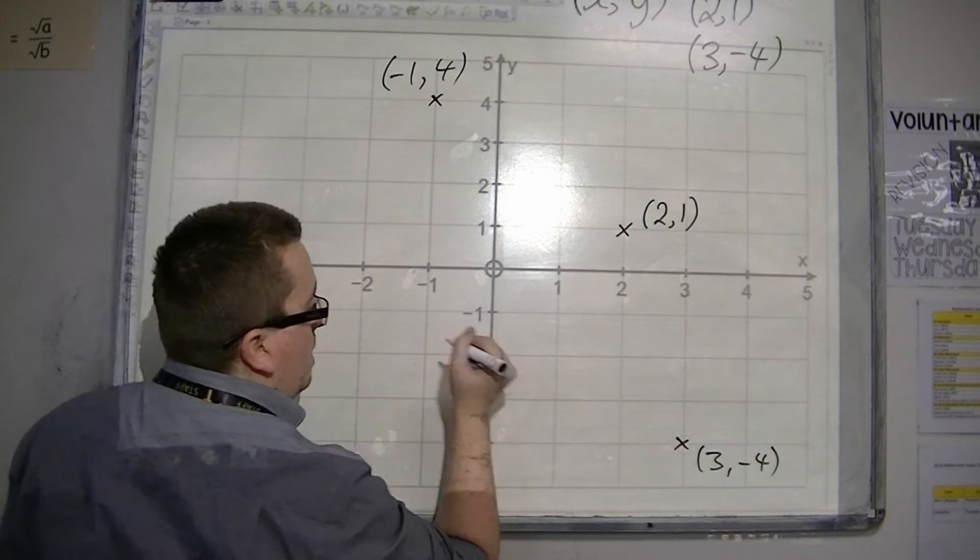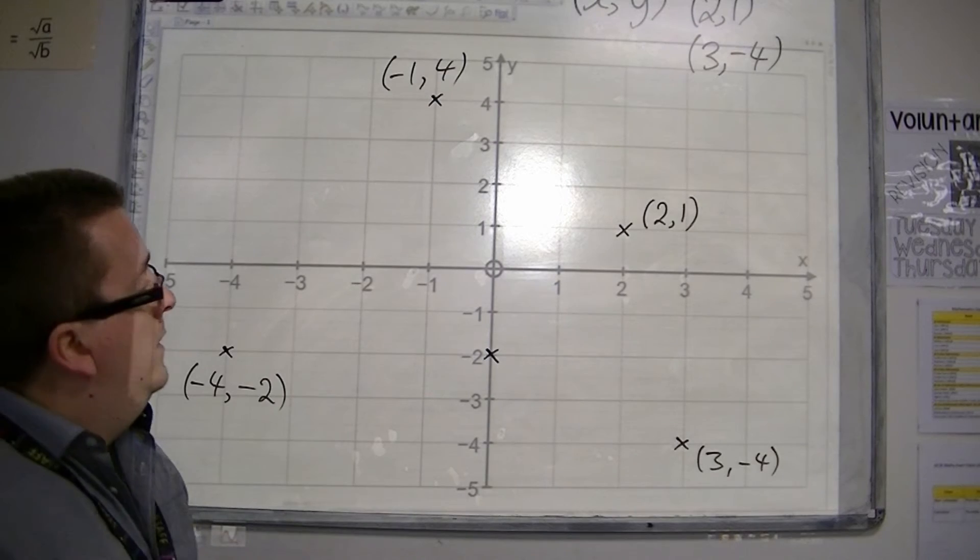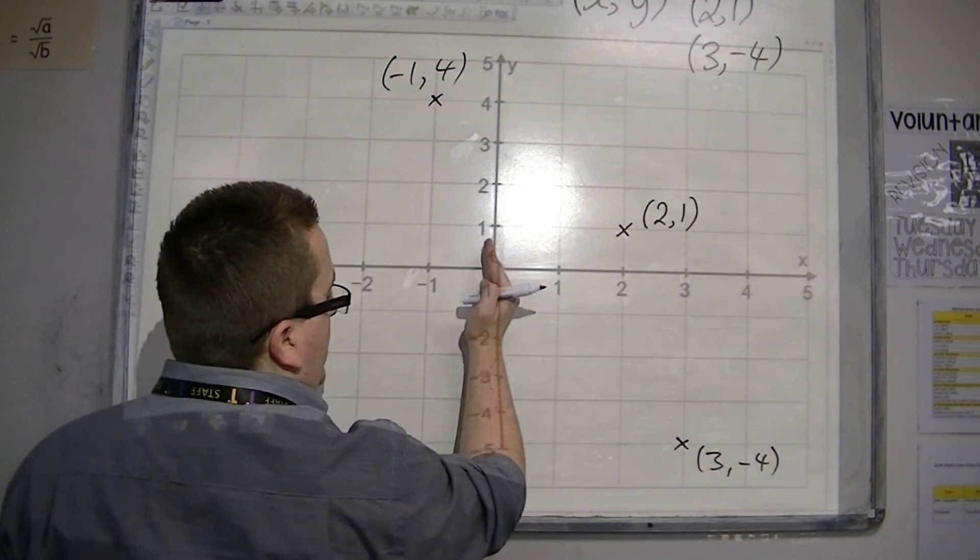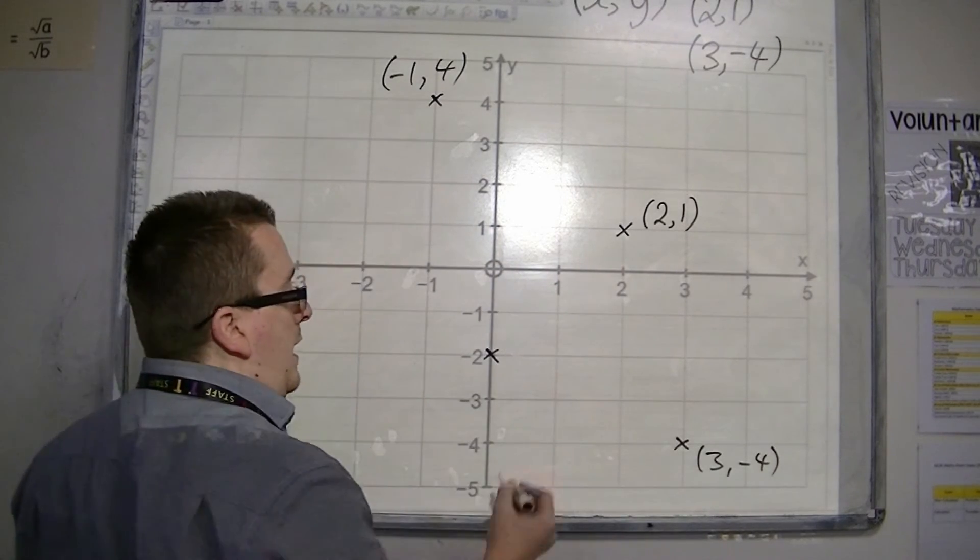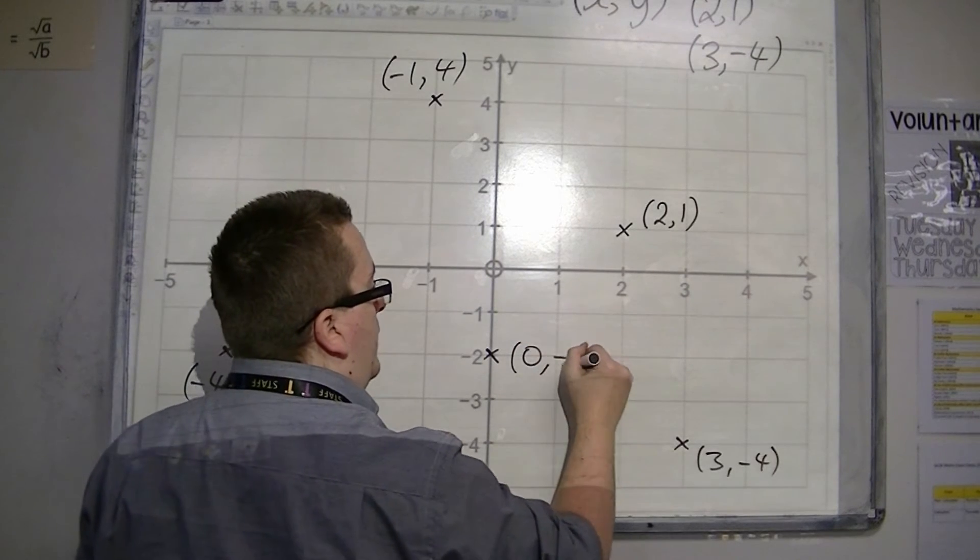So a point there, for example. Well, that's at 0 on the x-axis and minus 2 on the y-axis. So that's (0,-2).